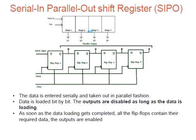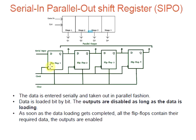In a Serial In Parallel Out shift register, the data is entered serially and taken out in parallel fashion. The data is loaded bit by bit, and the outputs are disabled as long as the data is loading. As soon as the data loading is completed and all flip-flops contain the required data, the outputs are enabled. Four clock cycles are required to load a four-bit word, so the speed of operation of SIPO mode is the same as that of SISO mode. Here you can see the corresponding logic diagram, which also uses four flip-flops.